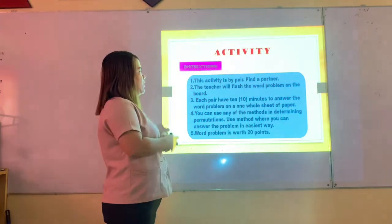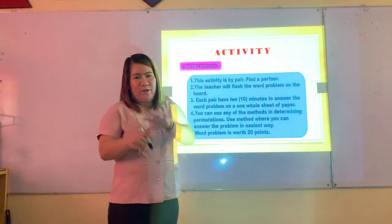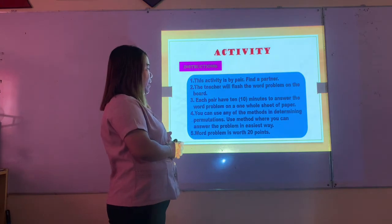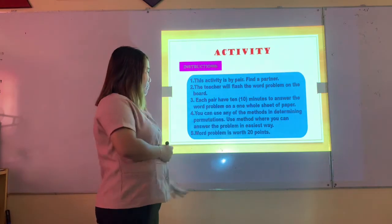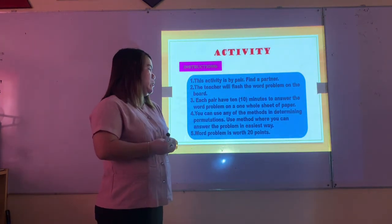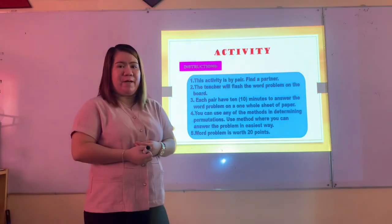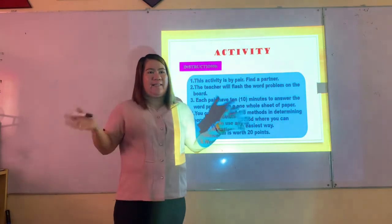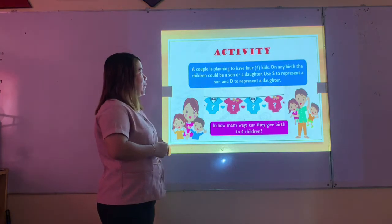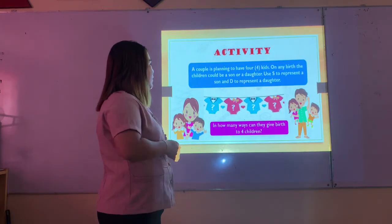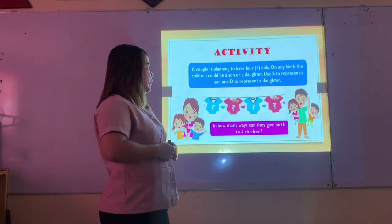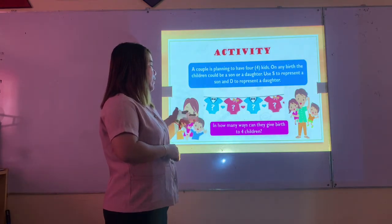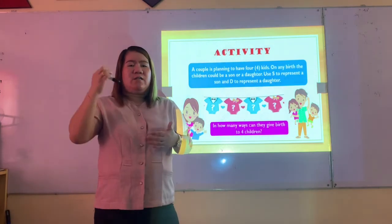Let's have an activity by pair — your partner is your seatmate. The teacher will flash a word problem on the board. Each pair has 10 minutes to answer on one sheet of paper. You can use any of the methods in determining permutations. The problem is worth 20 points. Here is the problem: A couple is planning to have four kids. On any birth, the child could be a son or a daughter. Use S for son and D for daughter. In how many ways can they give birth to four children? Ten minutes starts now.